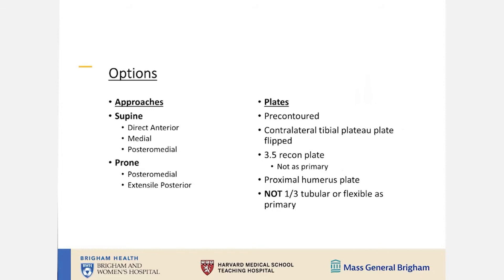You have multiple options for addressing proximal tibial fractures on the medial side: direct anterior, which has fallen out of favor; straight medial; posterior medial approaches; and the same posterior medial approach in the prone position. It is important to remember that you need a stout implant on the medial side - a one-third tubular plate is not sufficient. At minimum use a 3.5 recon plate, but contralateral tibial plateau plates or pre-contoured plates are preferred.